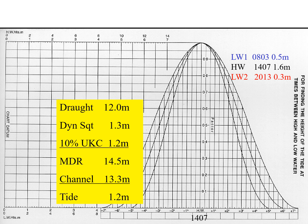The first step using the graph is to connect the low water 1 height to the high water height — that is, connecting 0.5 meters to 1.6 meters. The bottom horizontal line represents low water height and the top represents high water height. Using the scale 0–1–2–3–4, join 0.5 meters at the bottom to 1.6 meters at the top. This is the blue line.